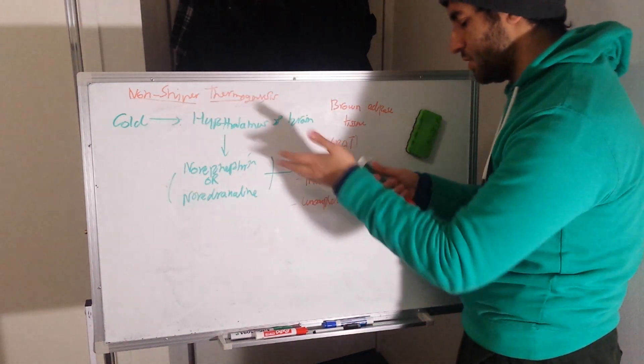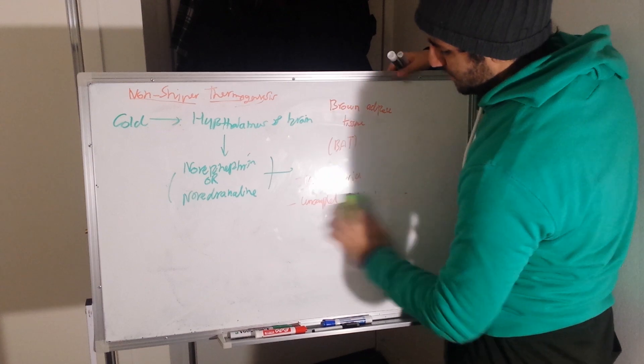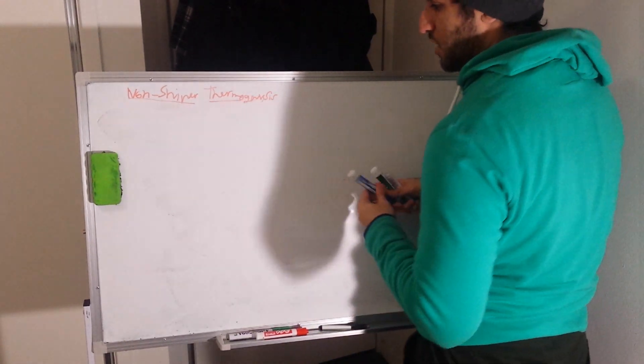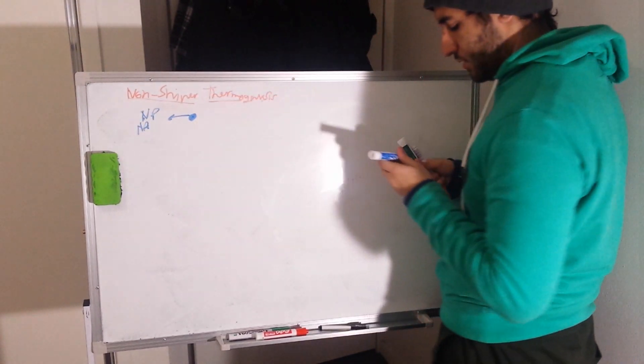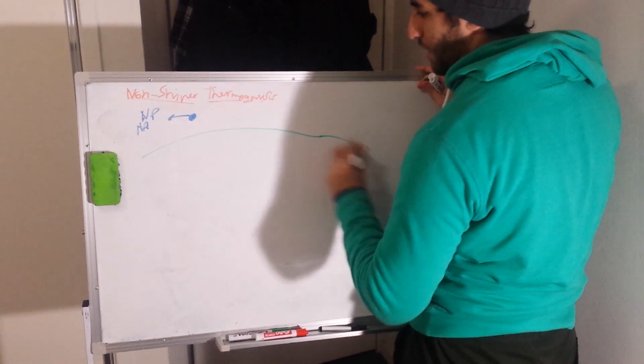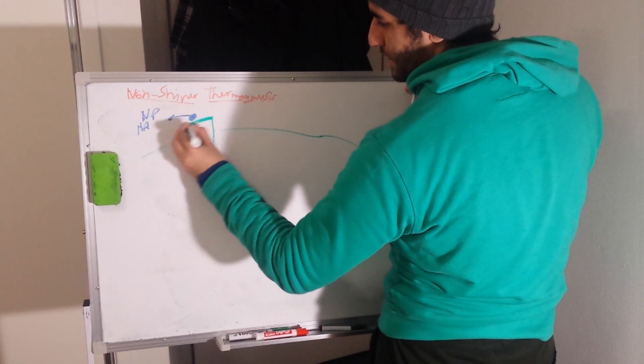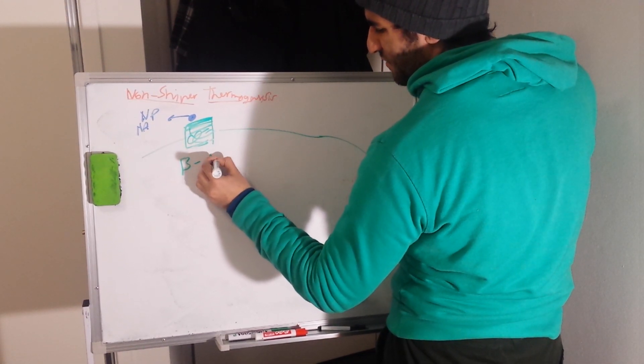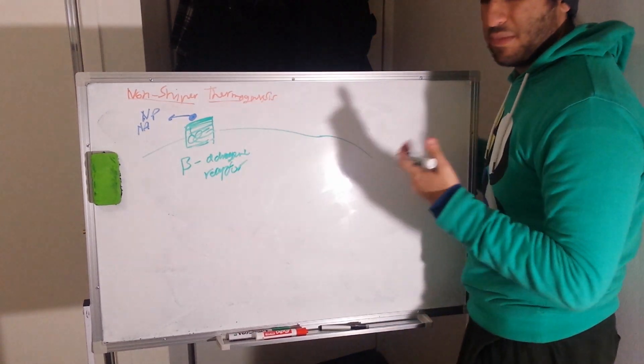You have the hormone being released in the blood circulation. Then once it goes to brown adipose tissue, it meets a specific receptor. So this is our norepinephrine. And here if this is our brown adipose tissue cell membrane, there is a specific receptor that norepinephrine will bind to, called the beta-adrenergic receptor.